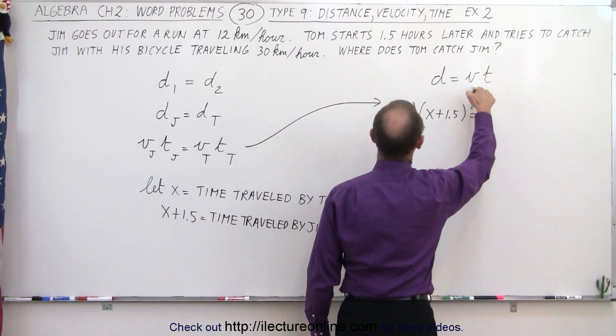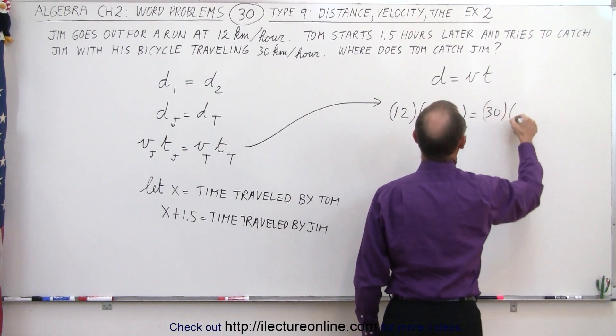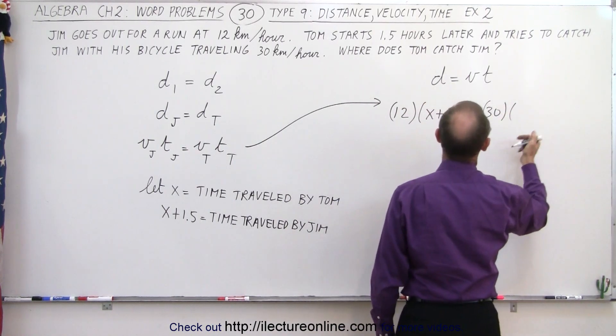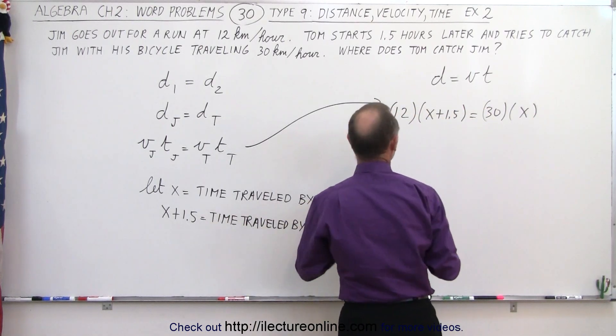And that equals the velocity traveled by Tom, which is 30 kilometers per hour, multiplied times x because x is the time traveled by Tom.